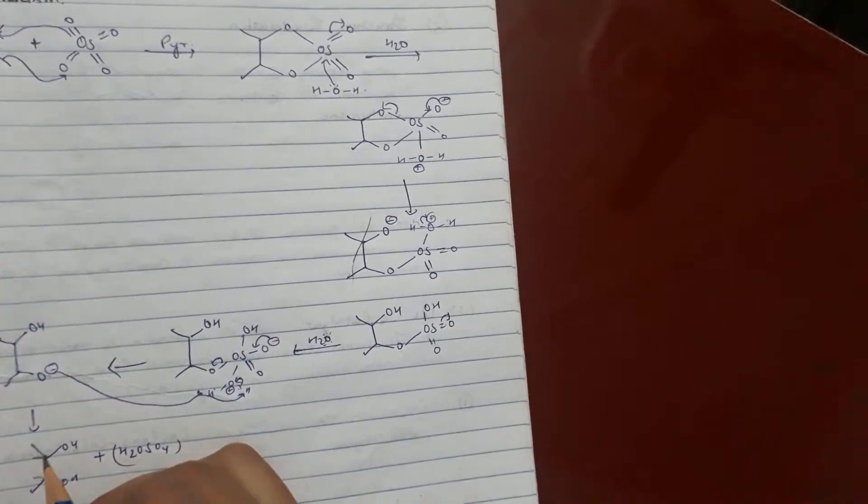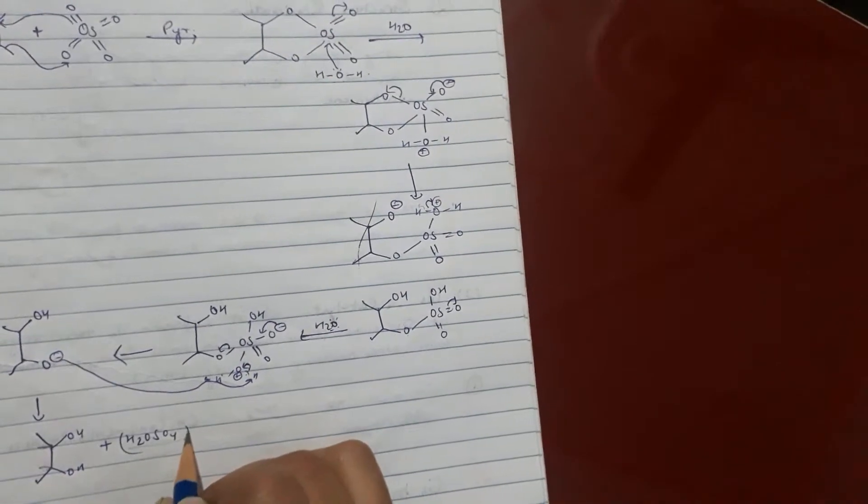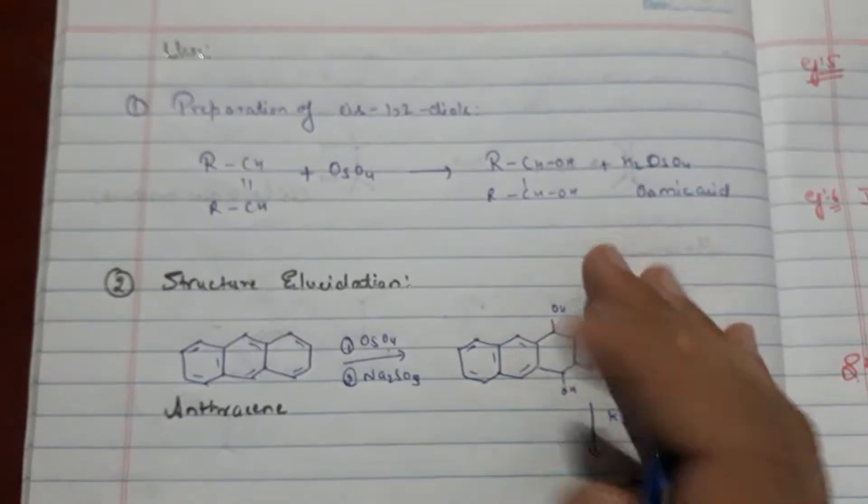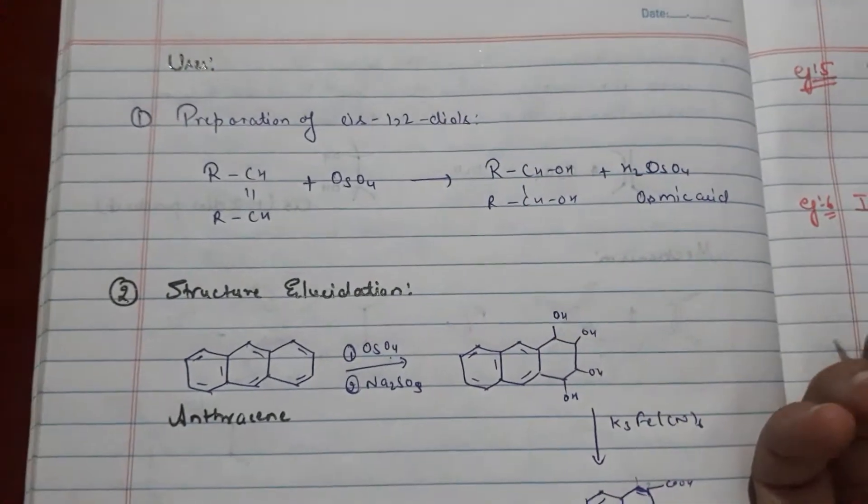This forms cis-diol product, and H2O-OsO4 will be side product. Now uses of osmium tetraoxide.